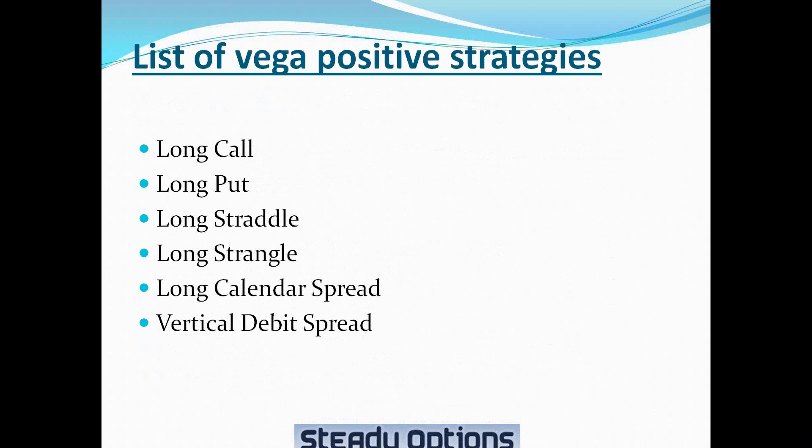A list of gamma-positive strategies includes long call, long put, long straddle, long strangle, long calendar, and vertical debit spread. As you can see, those are all buying strategies — we are buying some options or a combination of options.